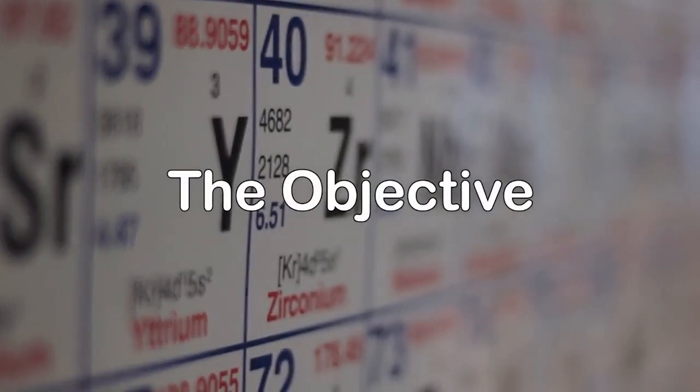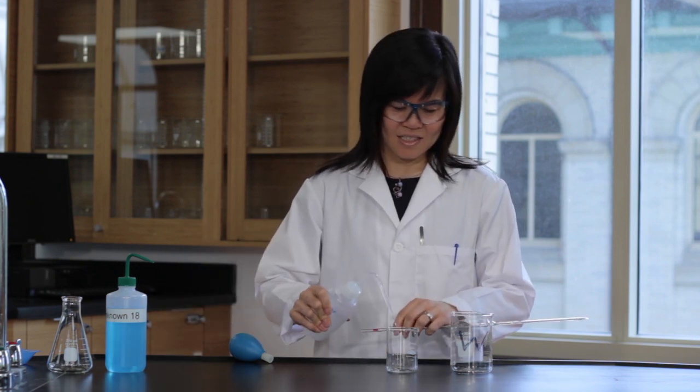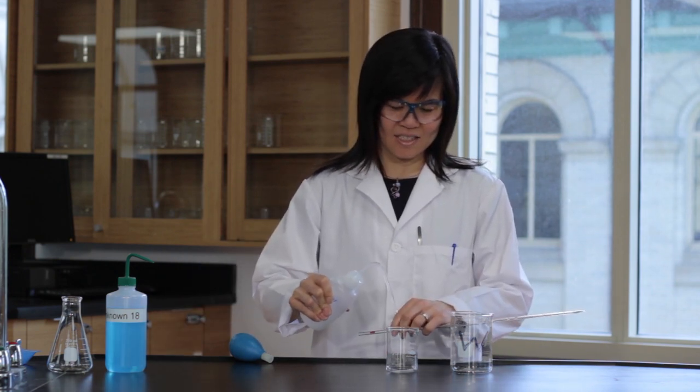To prepare a 10 milliliter volumetric pipette, first rinse it with distilled water. Add distilled water into a small clean beaker.